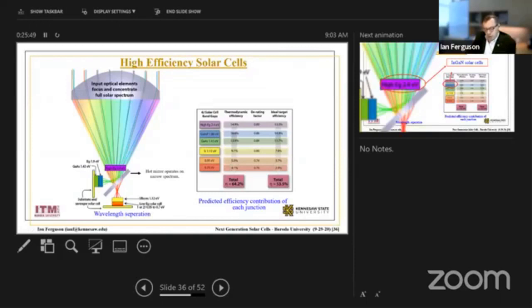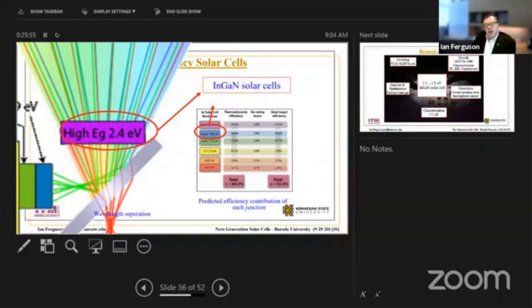So part of what we did in our contribution was to make these gallium indium nitride solar cells, to fit into this, and to make these higher bandgap materials.